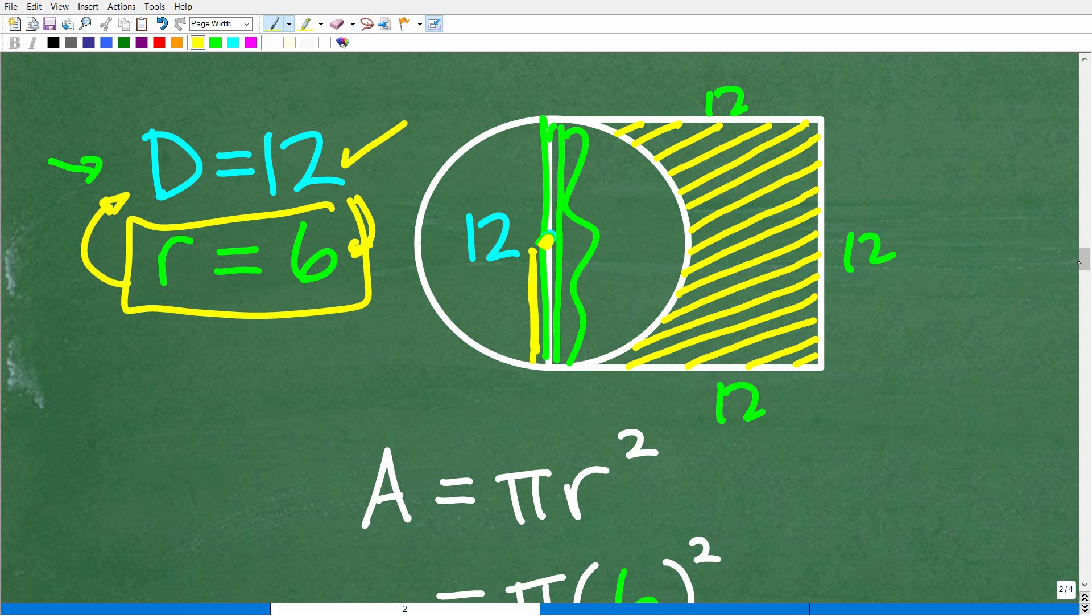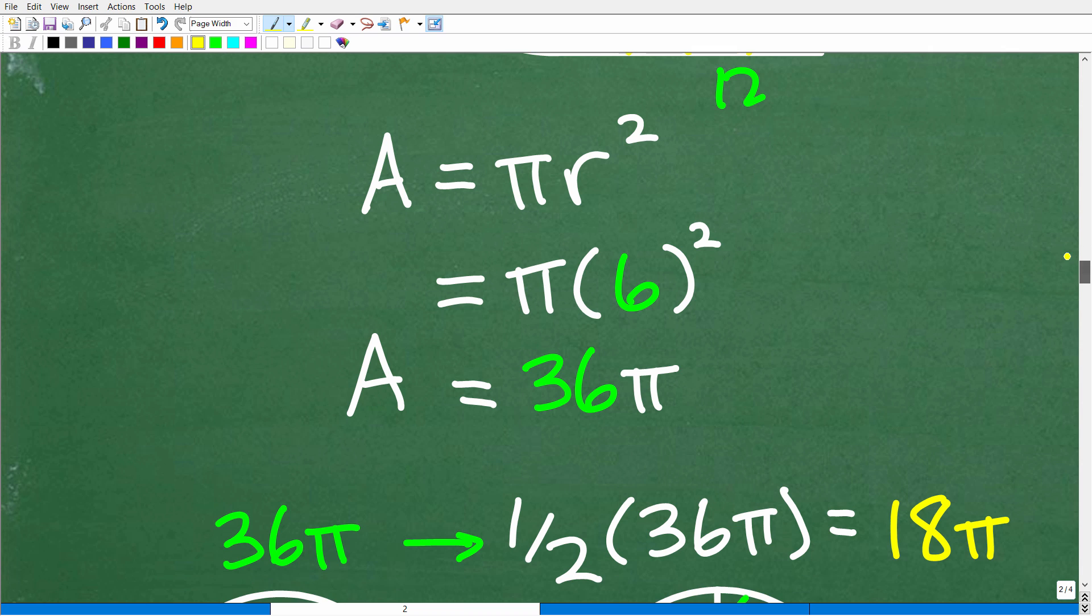So now all we need to do is plug in this information into our formula. So the area of the entire circle is πr². I'll get to this π business in a second. So we have the radius that is 6, so we're going to plug in 6 here and be very careful. A lot of students make the error of multiplying π times 6 and then squaring that. Remember, when we're talking about the basic order of operations, you have to do powers before multiplication. So 6 squared is 36, that's 6 times 6. So that's 36π.